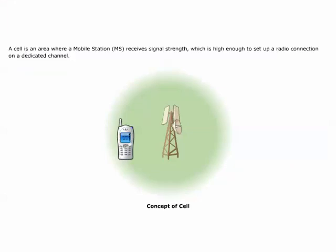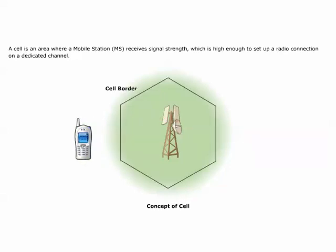A cell is an area where a mobile station receives signal strength which is high enough to set up a radio connection on a dedicated channel, that is the SDCCH or TCH, and maintain it.